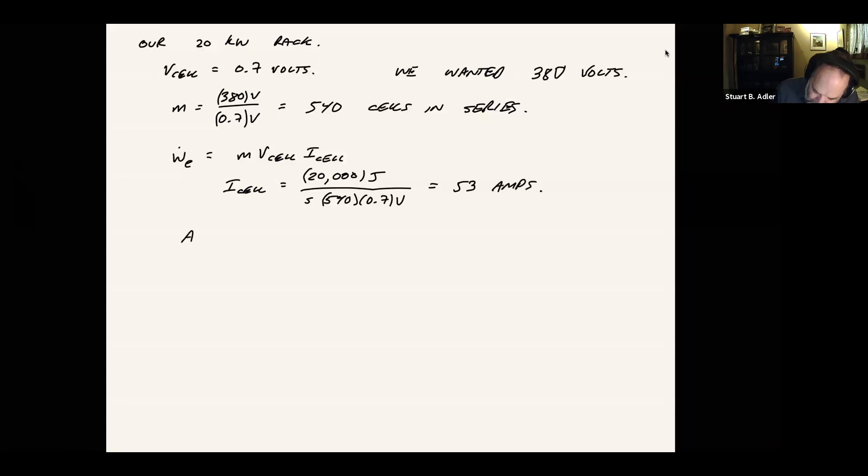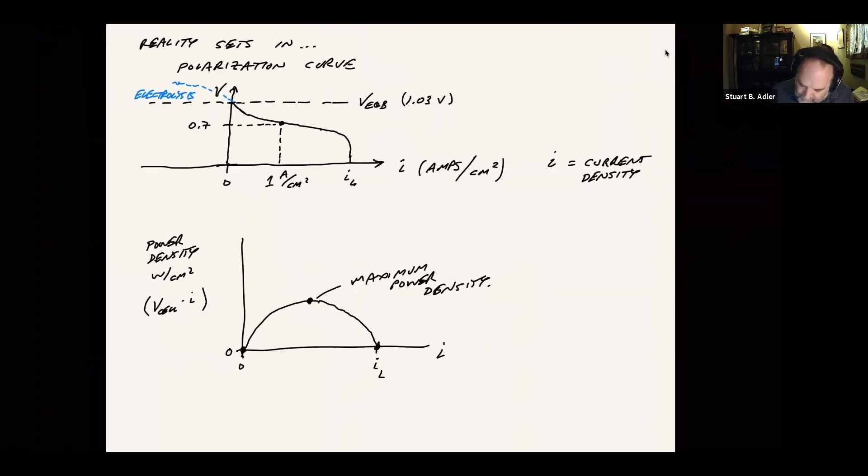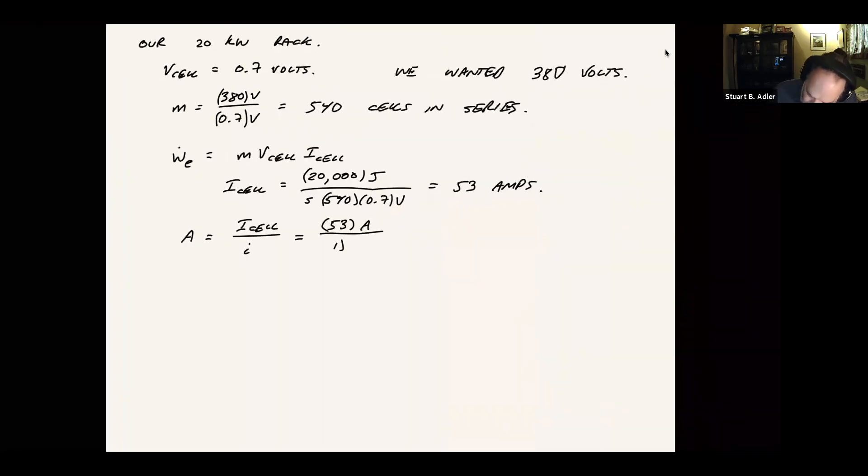So think about how big are these cells, the area of each cell. This would be the current on each cell divided by the current density. So we're passing 53 amps. And if we kind of use this polarization curve as our guide, let's say at 0.7 volts we're producing one amp per square centimeter. This would be one amp per centimeter squared. Amps cancel. This would give us 53 square centimeters.